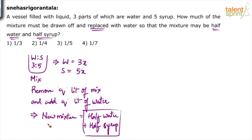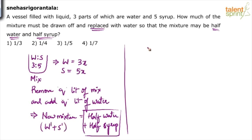Initially it is w and s; finally it is w-dash and s-dash. We can say that w-dash plus s-dash, where half is water and half is syrup. So the final water w-dash is equal to the final syrup s-dash — their quantities are equal.